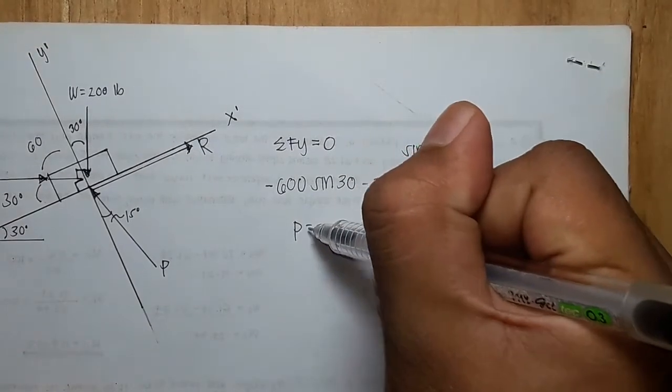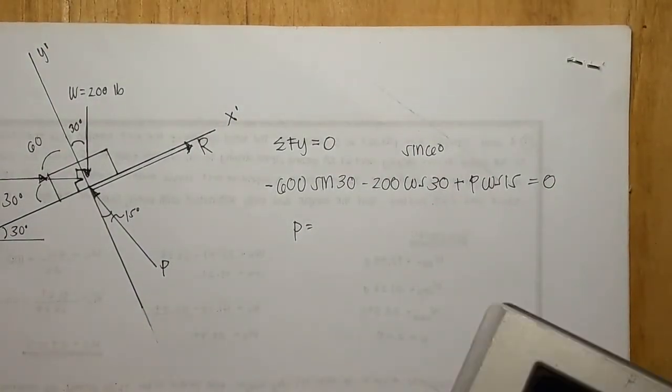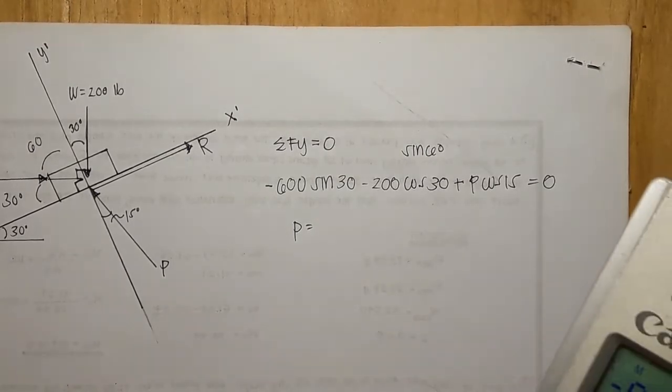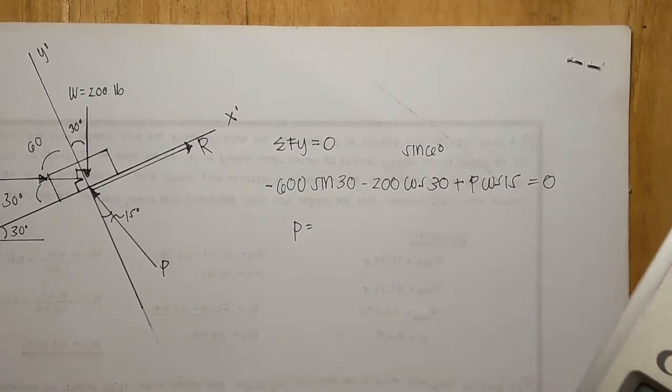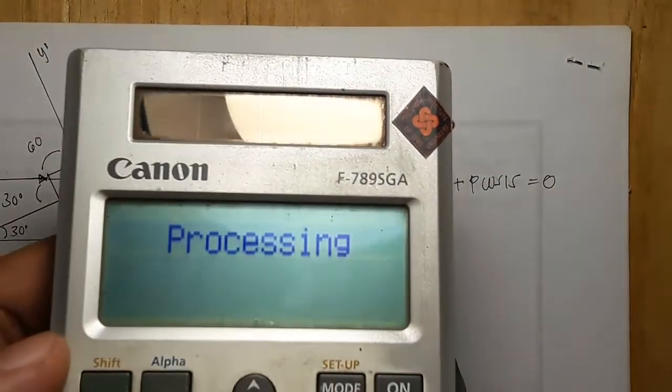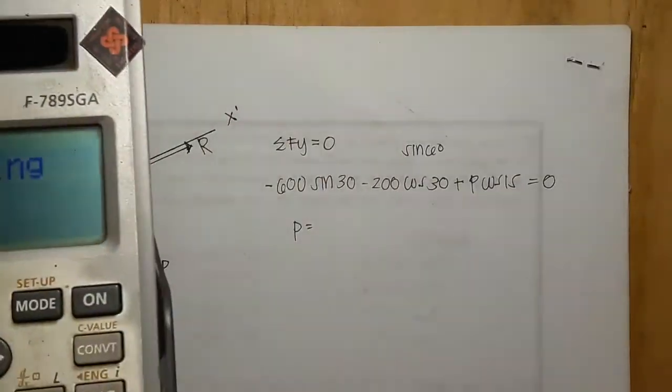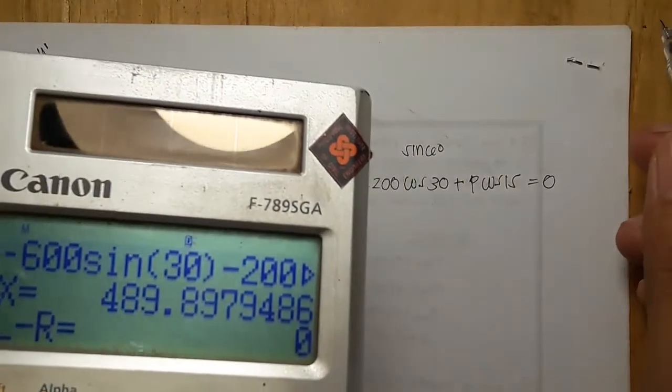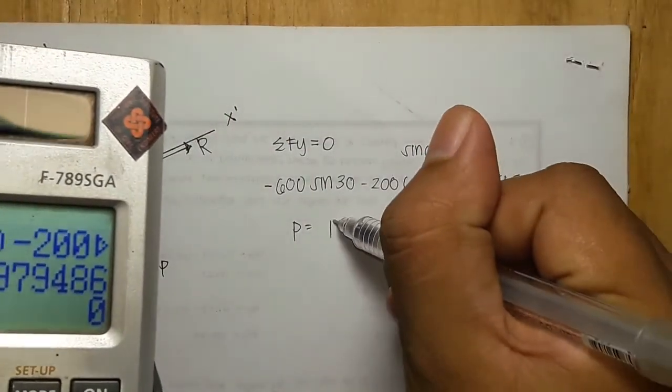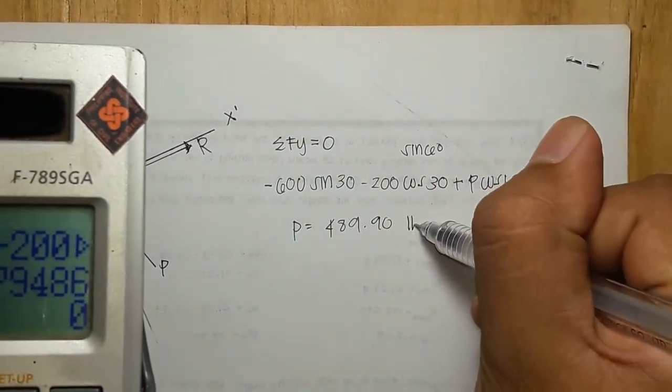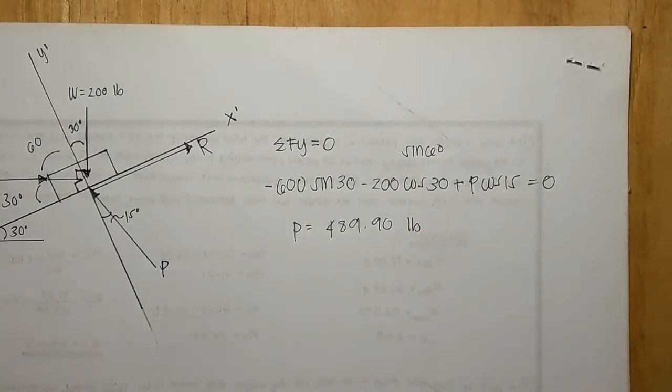So now we will have 630 minus 200 plus P cosine 15, so we have P equals 489.90 pounds. So we already have the P.